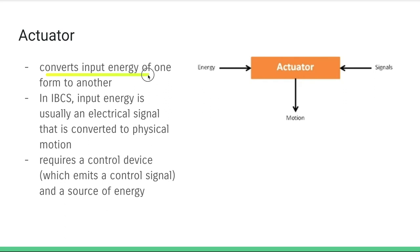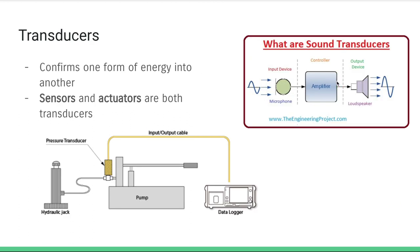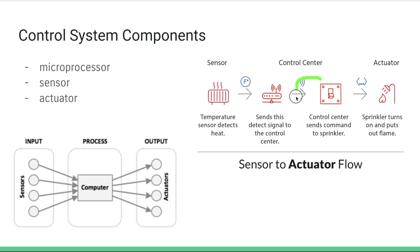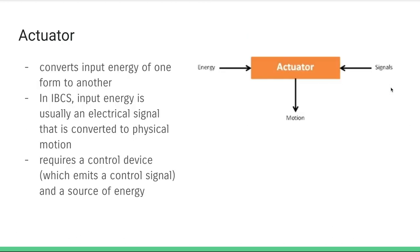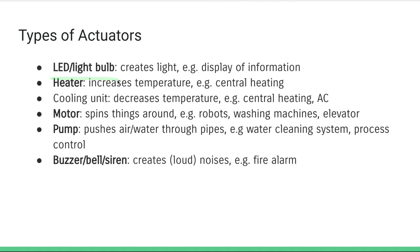An actuator converts input energy of one form to another — usually an electrical signal converted to physical motion in the IB Computer Science context. Every actuator requires a control device, which is our microprocessor, and a source of energy. Going back to our fire example, the microprocessor delivers an electrical signal, and the actuator, receiving that signal plus energy from another source, accomplishes the task of pushing water onto the flame. Some types of actuators include a light bulb, a heater, a motor (used in robots, washing machines, or elevators), a pump, or a buzzer or bell — all things that react to an electrical signal by releasing physical, heat, light, or sound energy.